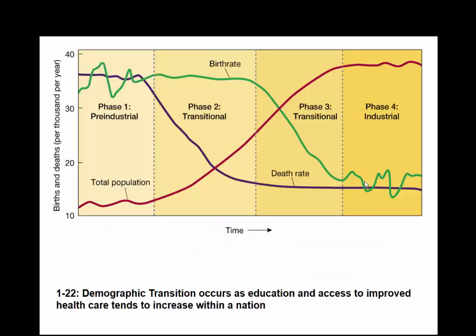We can look at demographic transition. When we look at births minus deaths, we see phase one, phase two, phase three. As death rates go down, we can see what happens to the rate of natural increase — going from pre-industrial to transitional to industrial. A lot of countries today, especially developed countries, have birth rates and death rates relatively about the same, resulting in very little population change.